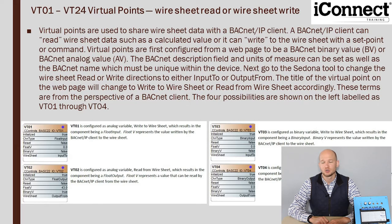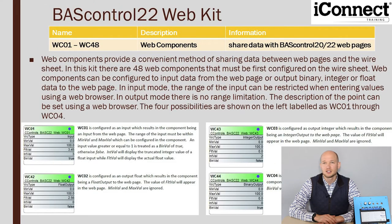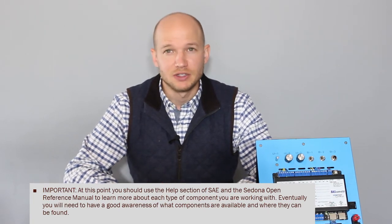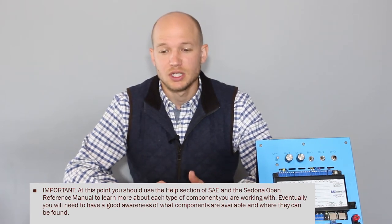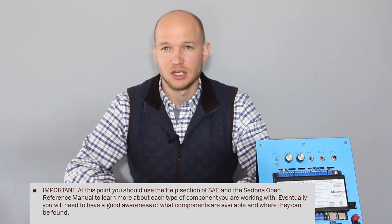Here we show a little more information on the virtual points. These are utilized to share wire sheet data with BACnet and IP clients, and those can read or write. The last components I wanted to touch upon are the web components. In this controller we can program 1 through 48, and like the virtual points these have a wide range of usage. If you'd like to learn more, you can use the help section in SAE or the Sedona open reference manual, which takes a deep dive into individual components and their functions.